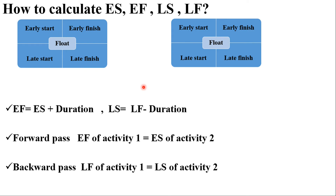How does one calculate earliest start, earliest finish, latest start, and latest finish for different activities? Each activity is represented by a node or box. On the top left corner you'll see the earliest start time; on the top right corner, the earliest finish time; on the bottom left corner, the latest start time; on the bottom right corner, the latest finish time; and float is placed in the middle.